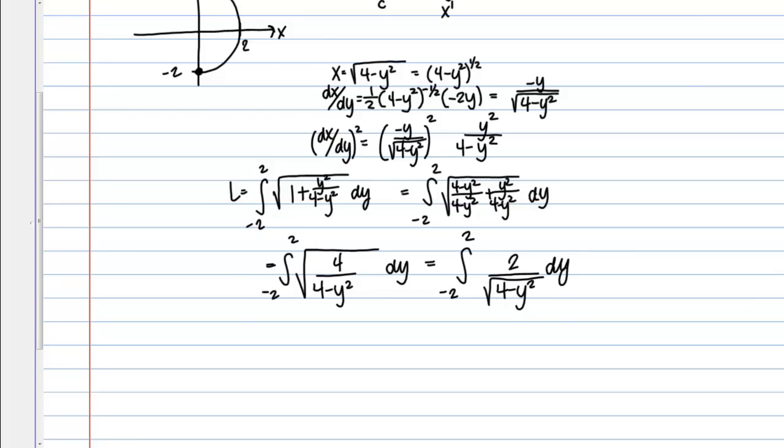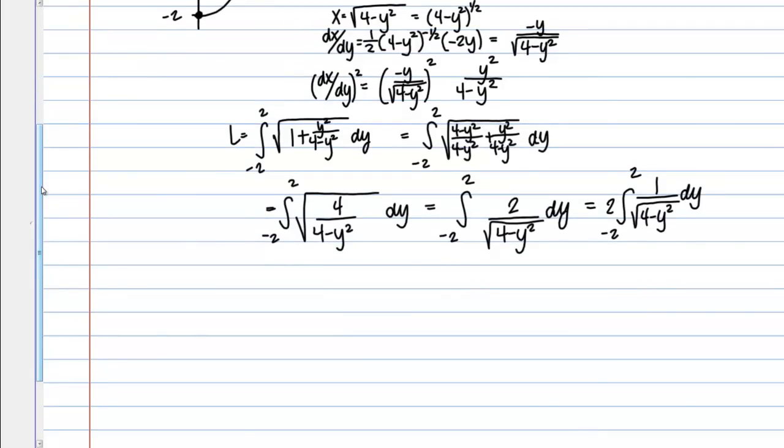So what do we think about this integral? Well, first of all I can pull this 2 out front if I'd like, and then looking at what's left inside, does this integral form look familiar to you at all? Well this is actually going to be the arcsine. So let me remind you of that formula. So if we have the integral of 1 over the square root of A squared minus X squared DX, that anti-derivative is the inverse sine or the arcsine of X over A.